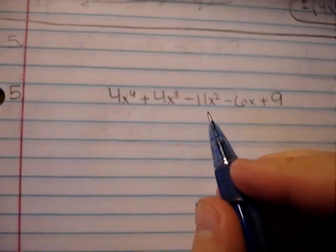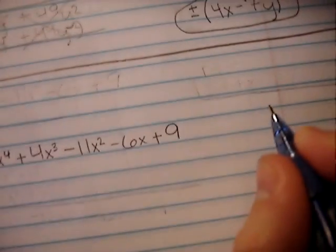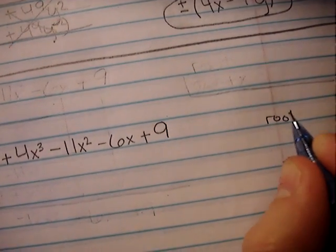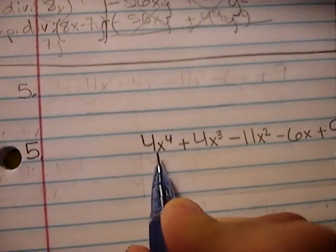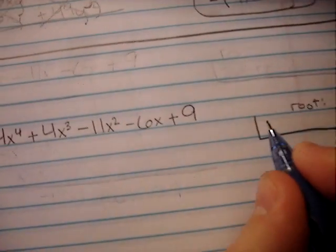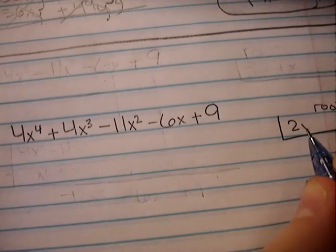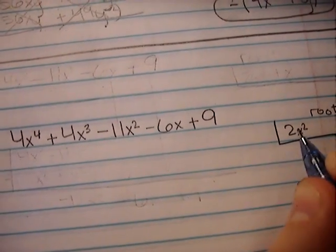I'm going to work with problem 5 on page 172. Let me go ahead and wrap my answer section right here. Let's just take the root of the first term. That's going to be the first answer. It's 2x squared, the first root in our answer.